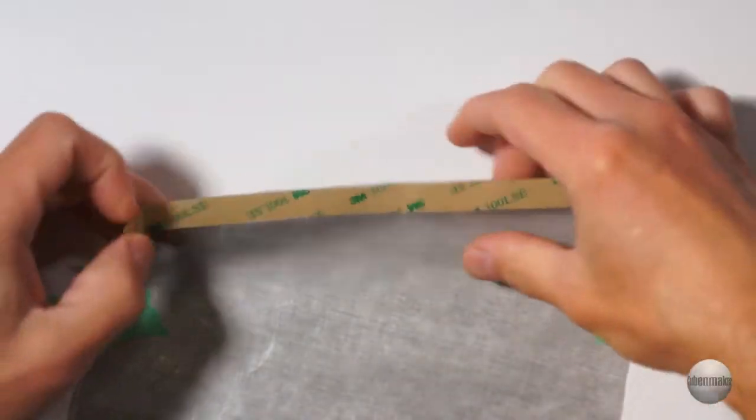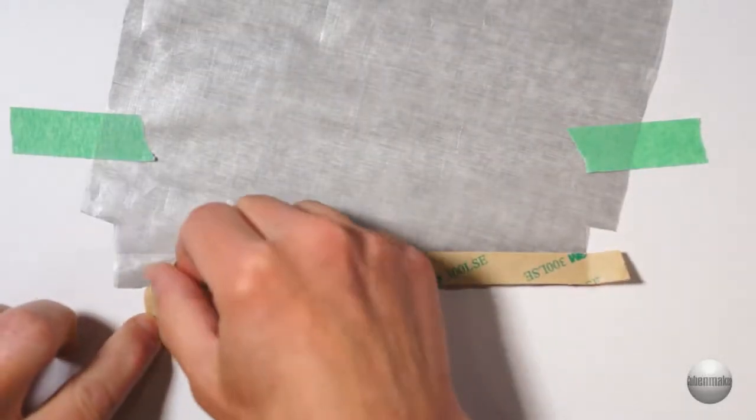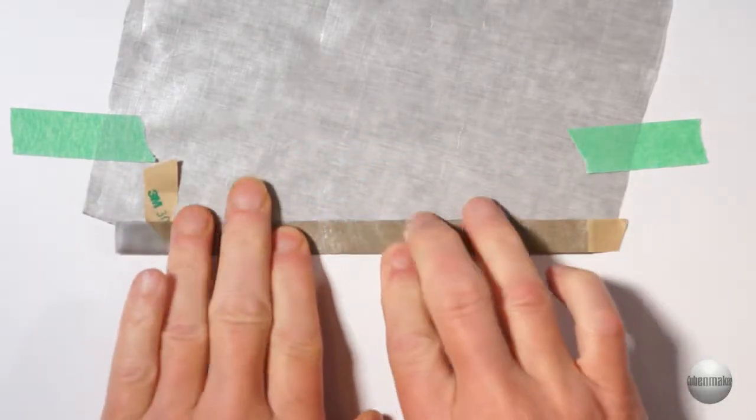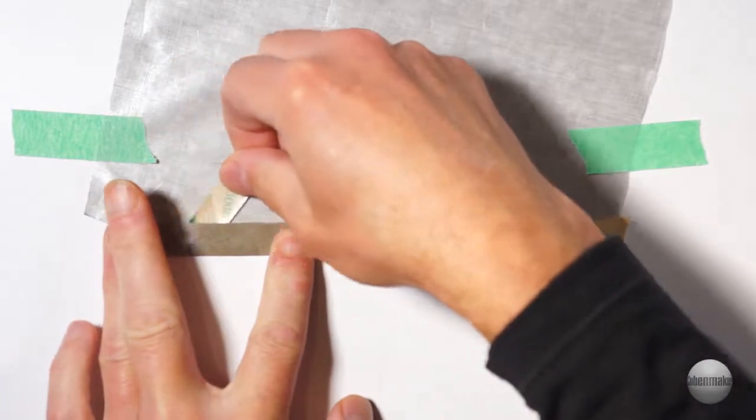Then I turn the part over. This tape is very sticky, so I like to use a safe method where I peel off the backing under the material.